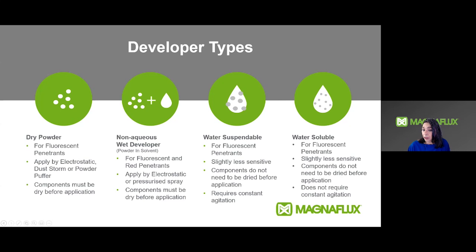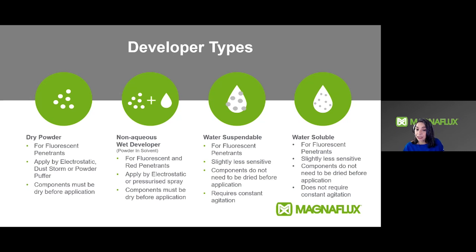There are four developer types. Dry powder is to be used only with fluorescent penetrant. Components must be dried before applying dry developer or non-aqueous developer. The dry powder should be applied to contact all surfaces to be inspected. Excess dry developer may be removed by light tapping or light air blow-off not exceeding 5 psi. Dry developer should not be used with type 2 penetrant.